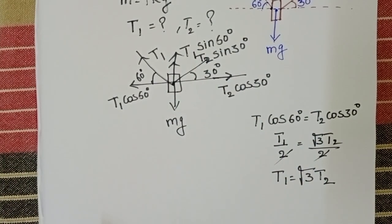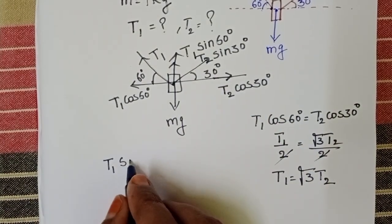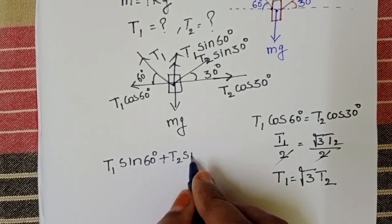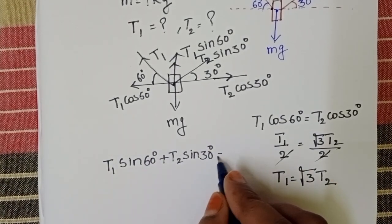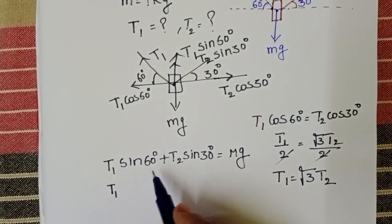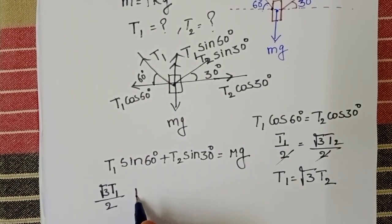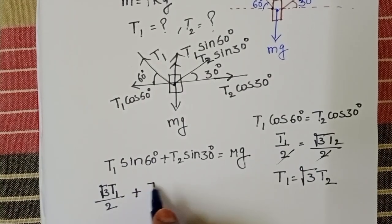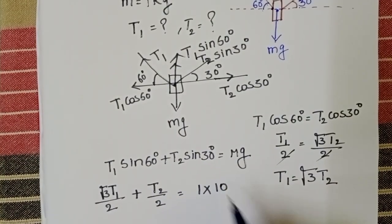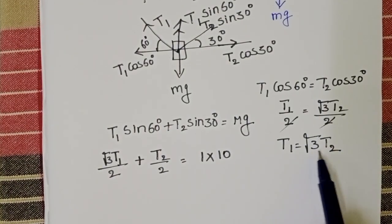Vertically also in equilibrium position. In upward direction forces T1 sin 60 degrees plus T2 sin 30 degrees and in downward direction, weight of the body acts mg. T1 sin 60 value root 3 by 2 plus T2 sin 30 degrees 1 by 2. Given mass is 1 kg and g value is 10 meter per second square. In place of T1 substitute root 3 T2.